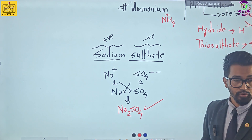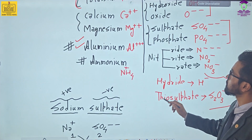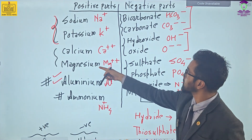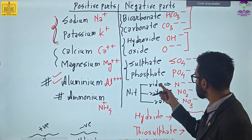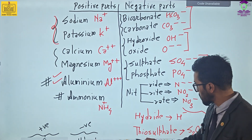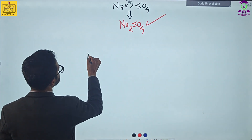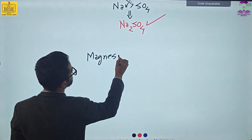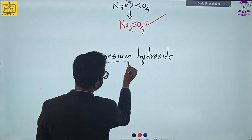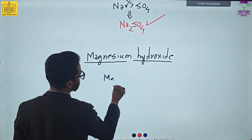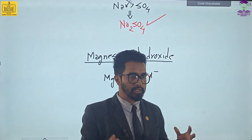Let's try the next compound — magnesium hydroxide. Magnesium is Mg²⁺ and hydroxide is OH⁻ according to the chart. So you need to remember the chart and then you can make a compound. Magnesium valency according to its charges is 2, and hydroxide valency is 1. Now let's criss-cross — exchange the valency.